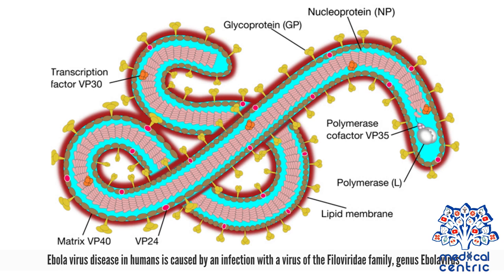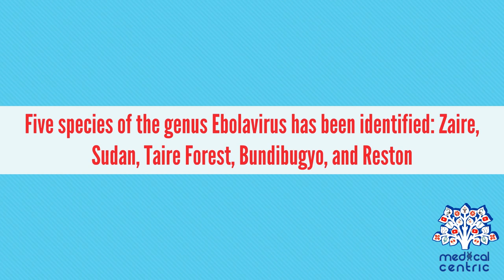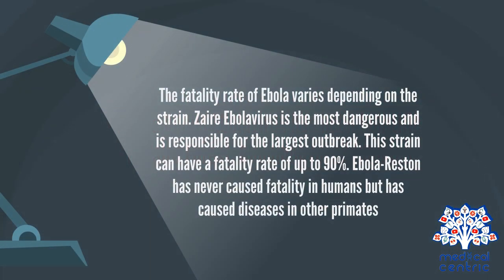Ebola virus disease in humans is caused by an infection with a virus of the Filoviridae family, genus Ebola virus. Five species of the genus Ebola virus have been identified: Zaire, Sudan, Tai Forest, Bundibugyo, and Reston. The fatality rate of Ebola varies depending on the strain. Zaire Ebola virus is the most dangerous and is responsible for the largest outbreak, with a fatality rate of up to 90%. Ebola Reston has never caused fatality in humans, but has caused disease in other primates.